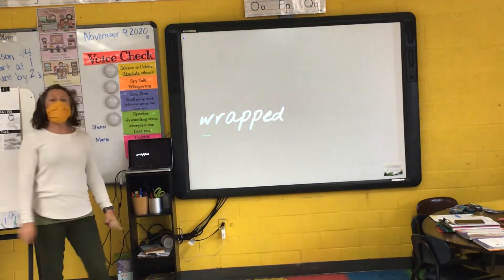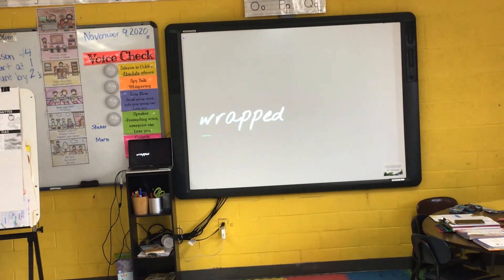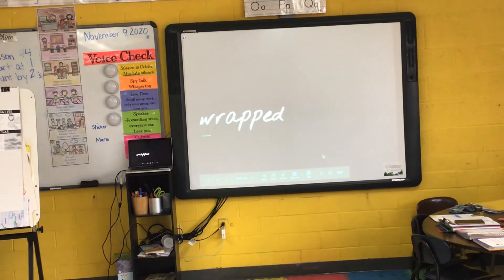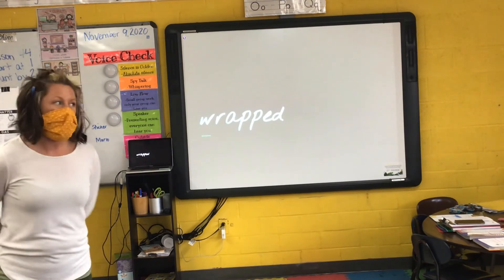My next word is wrapped. I say it, you say it — wrapped. What sound do we hear at the end of wrapped? I hear the sound of T. Notice that the E-D helps make that sound. One syllable in wrapped. The root word or base word of wrapped is wrap. Notice that my W is silent — when W and R are together in a word, we just hear the sound of R. So my word is wrapped.